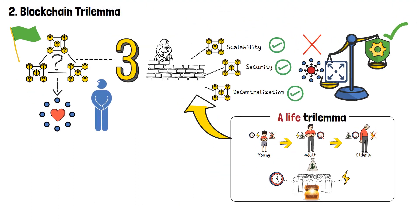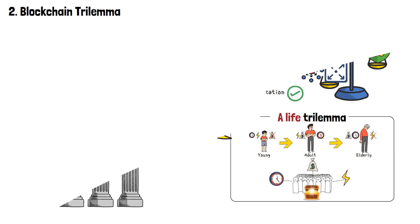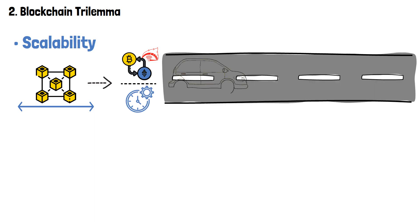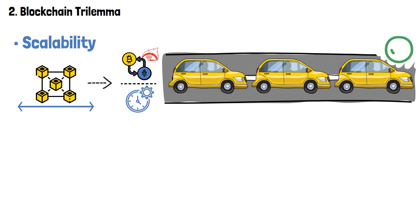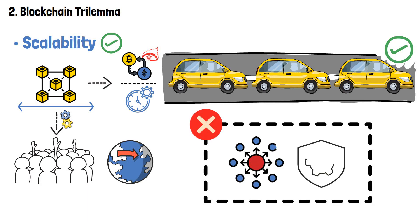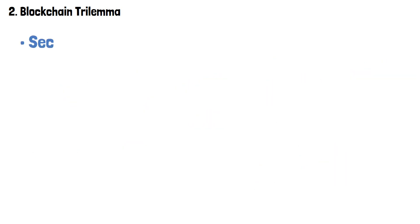That's a life trilemma. The blockchain trilemma is a similar concept. Let's dive deeper into the three pillars that constitute it. First of all, we've got scalability. Blockchain scalability refers to the network's ability to handle a high volume of transactions swiftly and efficiently. It's like a busy highway that can accommodate numerous vehicles without congestion. Achieving high scalability ensures that blockchain networks can support mass adoption and widespread usage. However, scaling solutions often involve trade-offs, such as sacrificing decentralization or compromising security.